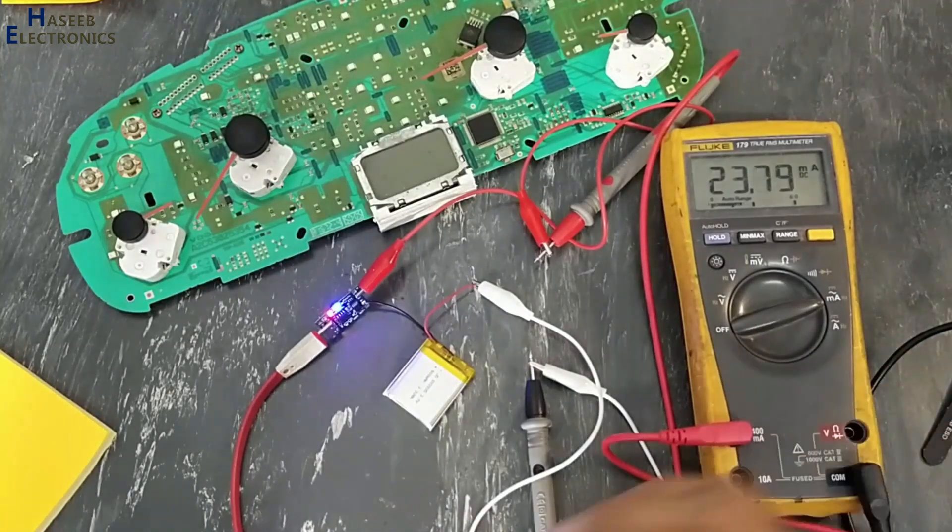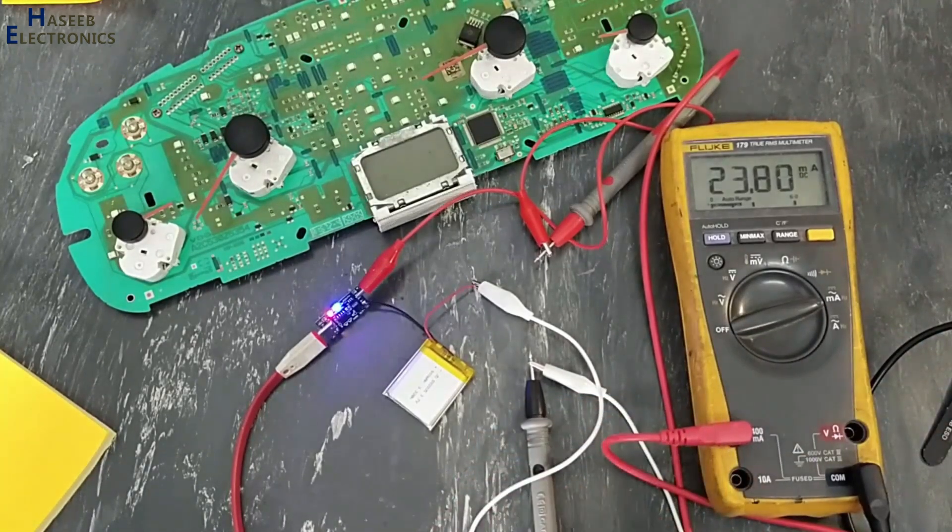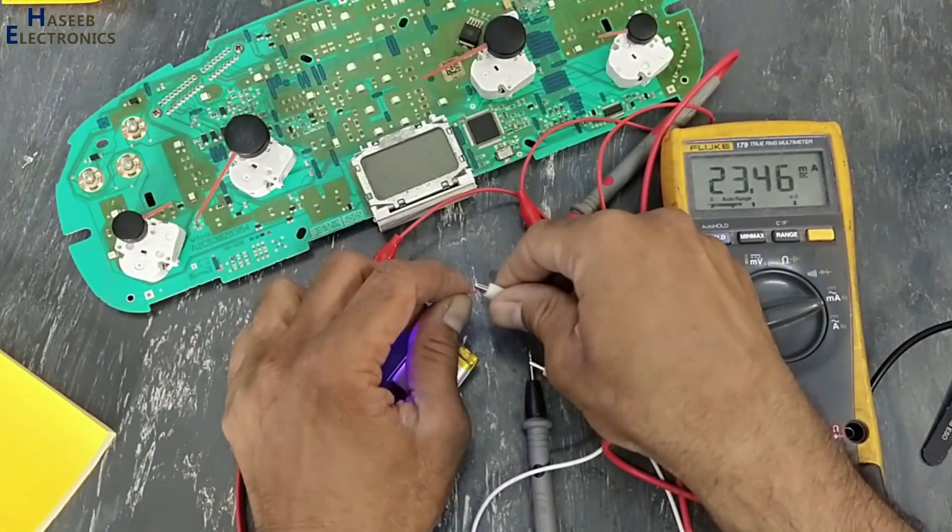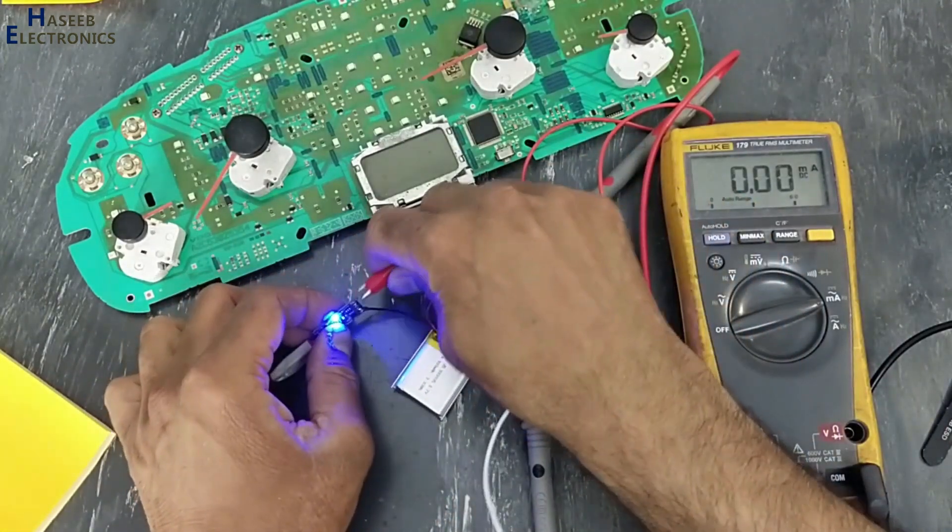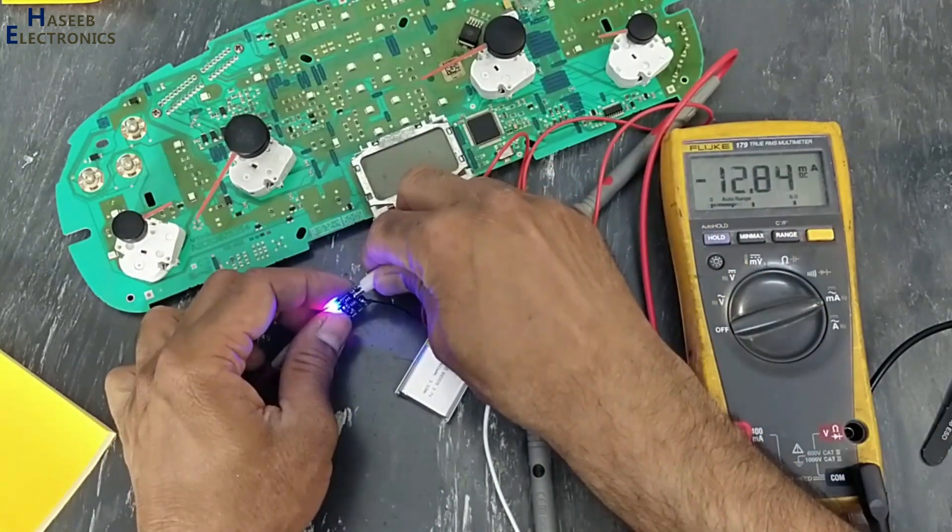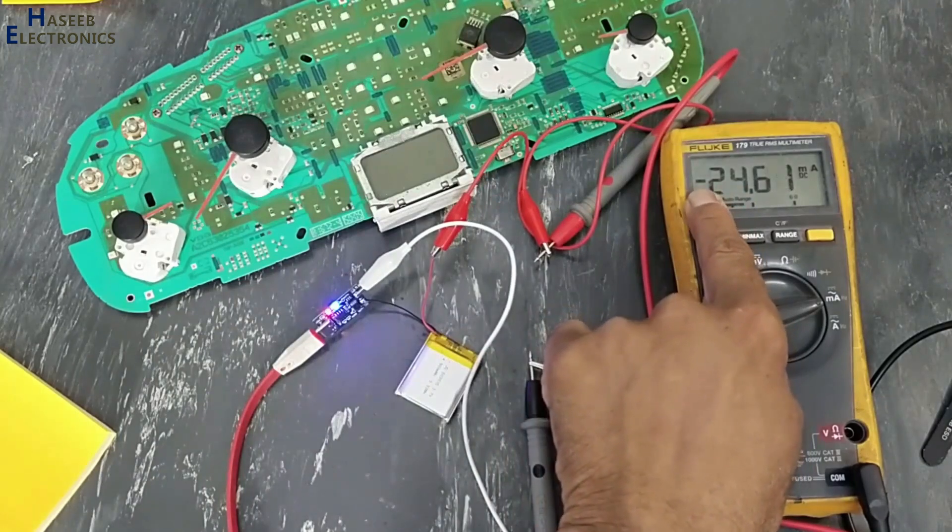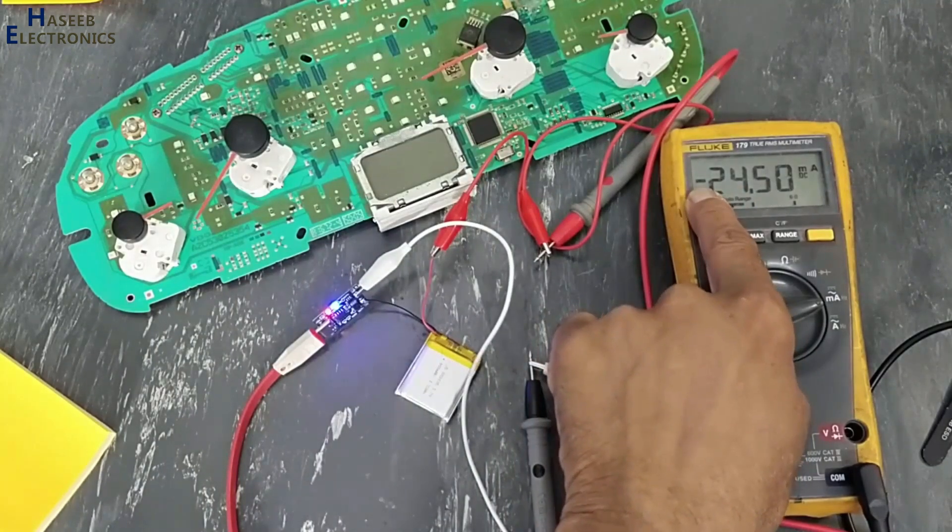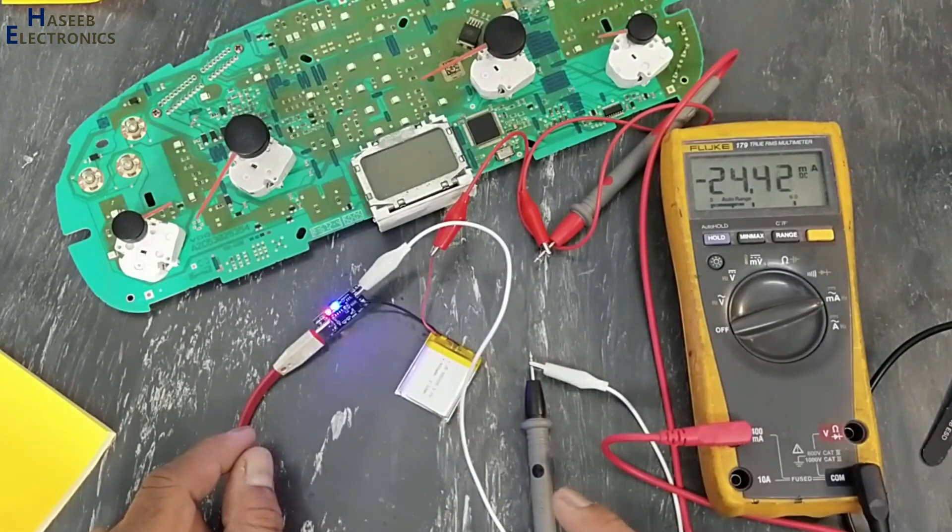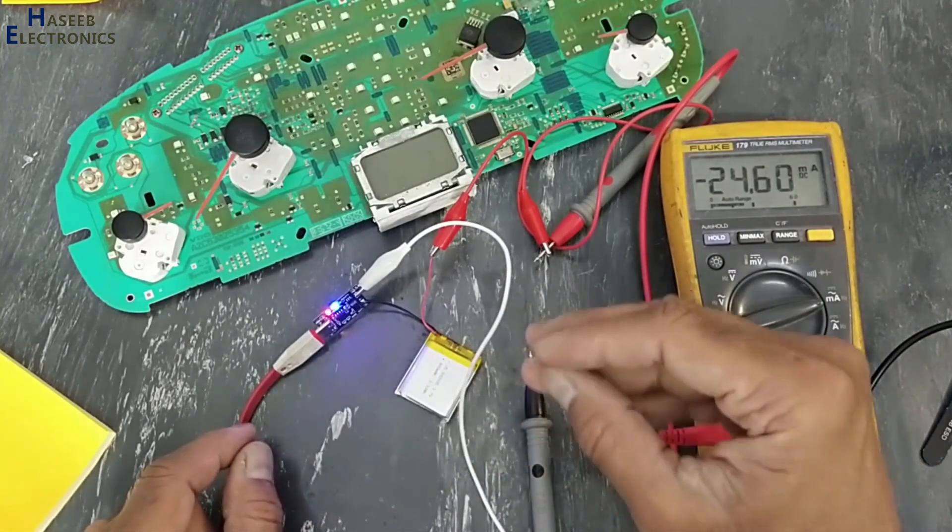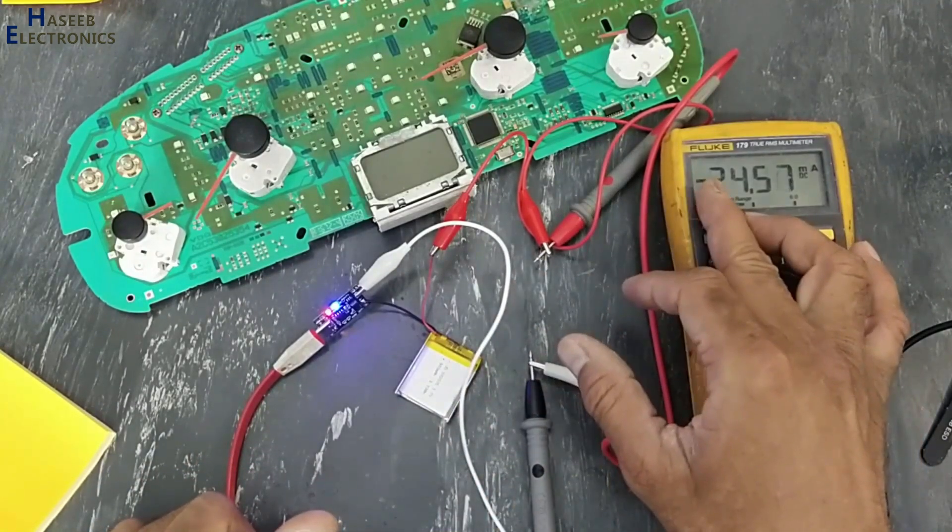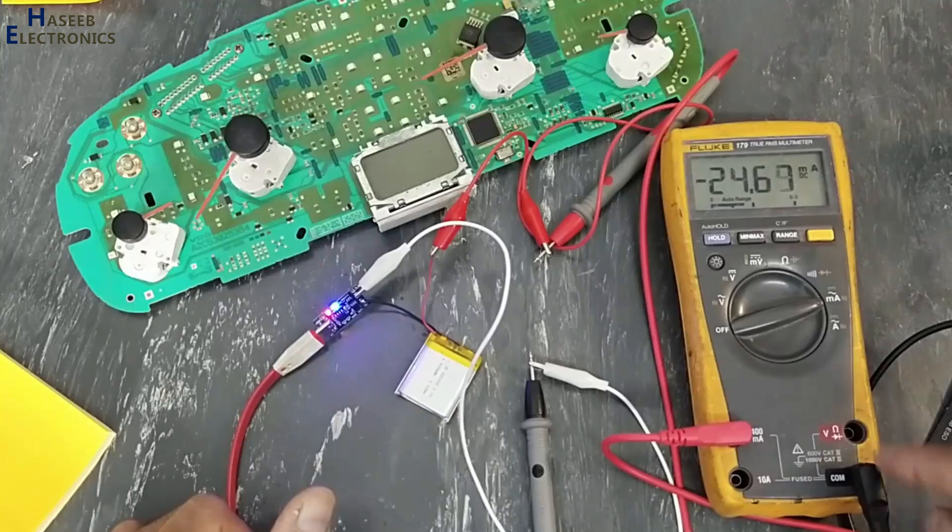Now if you connect this multimeter in opposite direction, now the current is a minus, negative sign that multimeter is connected in reverse direction. Sometime we connect this multimeter while the battery is discharging, that time we will also see the same indication that flow of current is now in opposite direction.